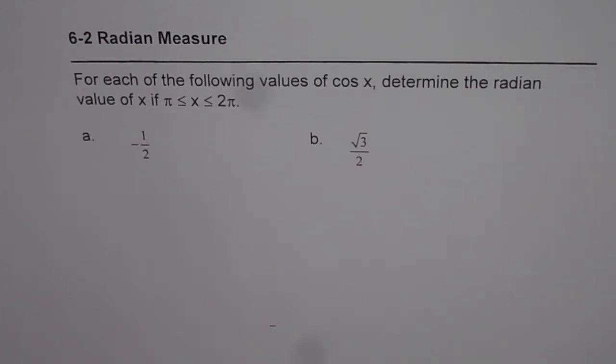For each of the following values of cos x, determine the radian value of x if π ≤ x ≤ 2π.